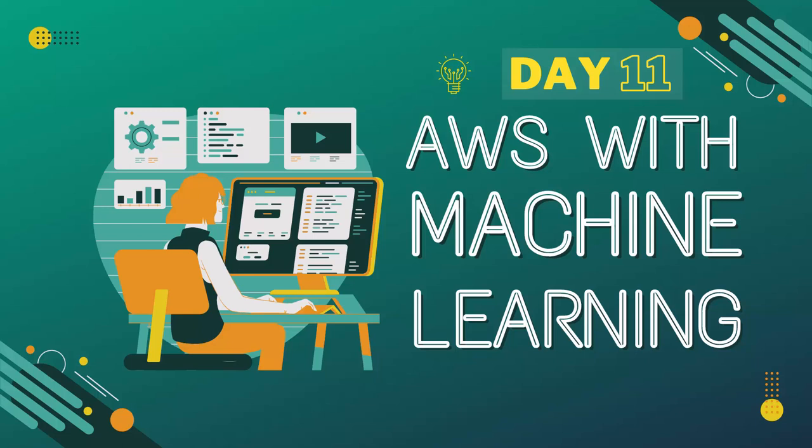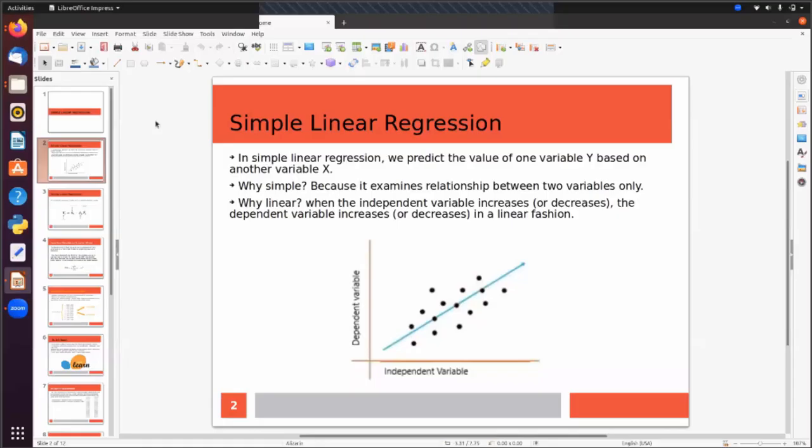Hello guys, welcome to the session. In this session we will talk about how to implement machine learning using scikit-learn and AWS SageMaker. Today we will start machine learning from regression.